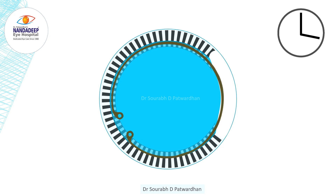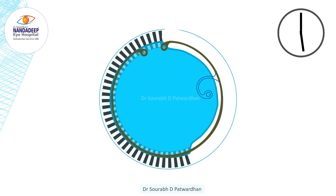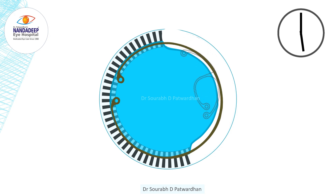When the subluxation is three to four clock hours, a CTR or capsular tension ring is enough to manage the case. But when the subluxation is more than that — say four to six clock hours — then we have to use a scleral fixation device like a Sioni ring attached to the sclera, or alternatively put a CTR and then use a CT segment attaching it to the sclera. This is my favorite method.